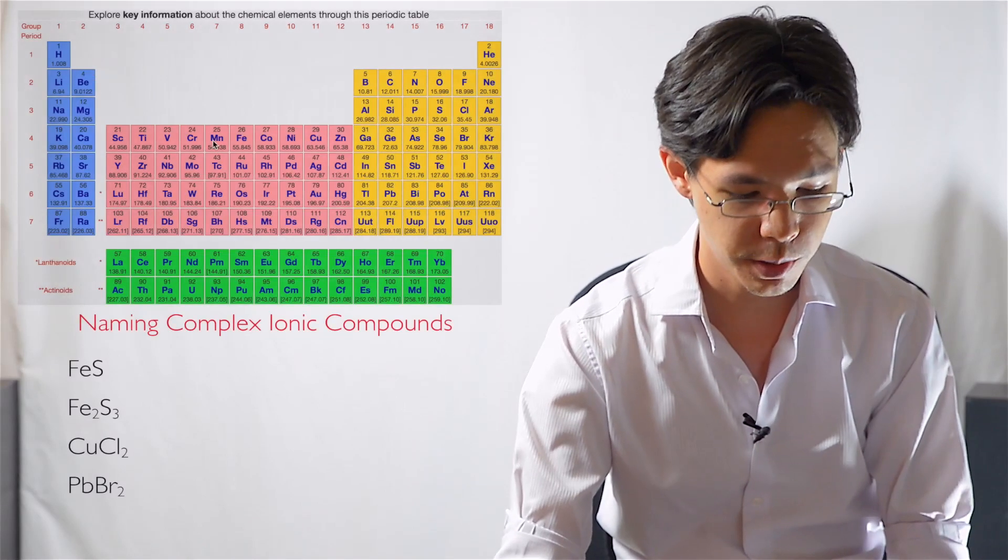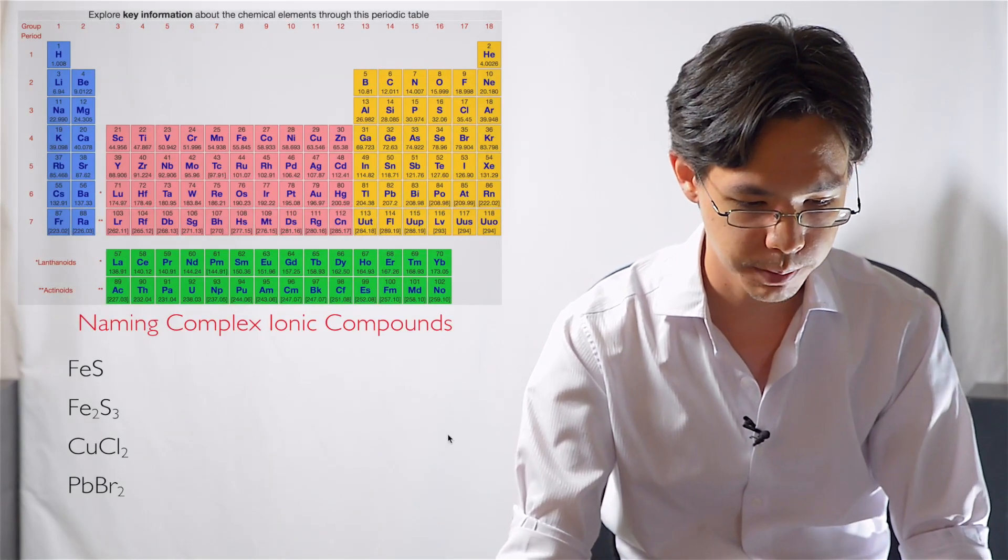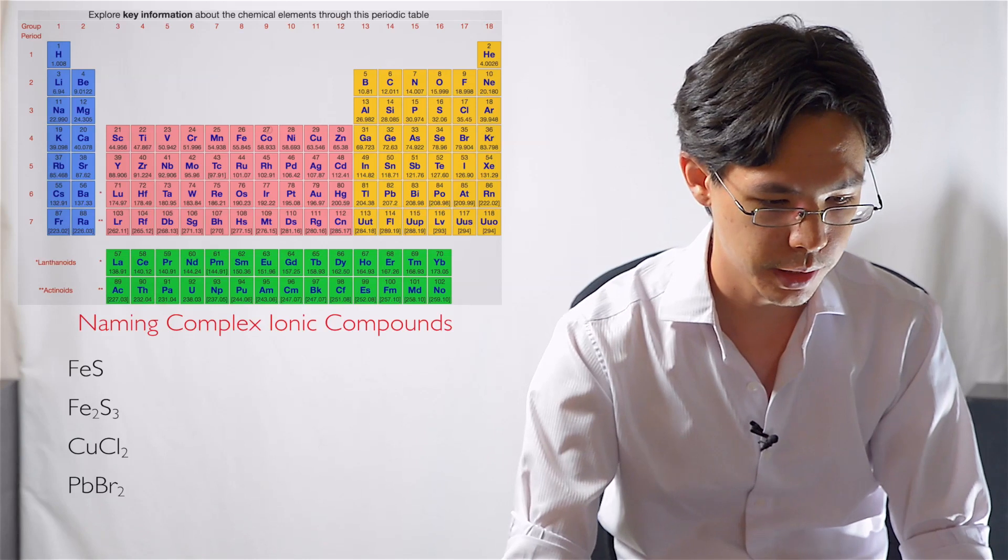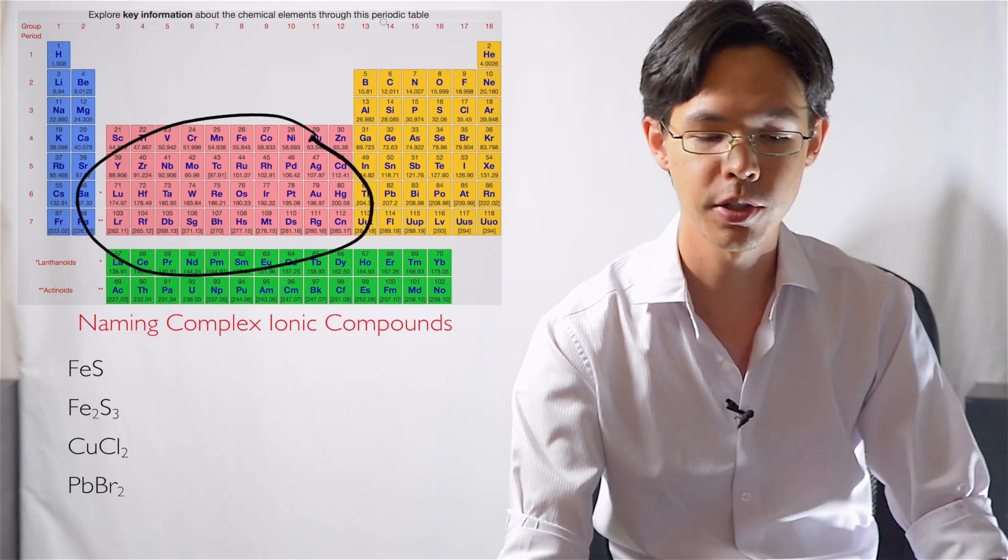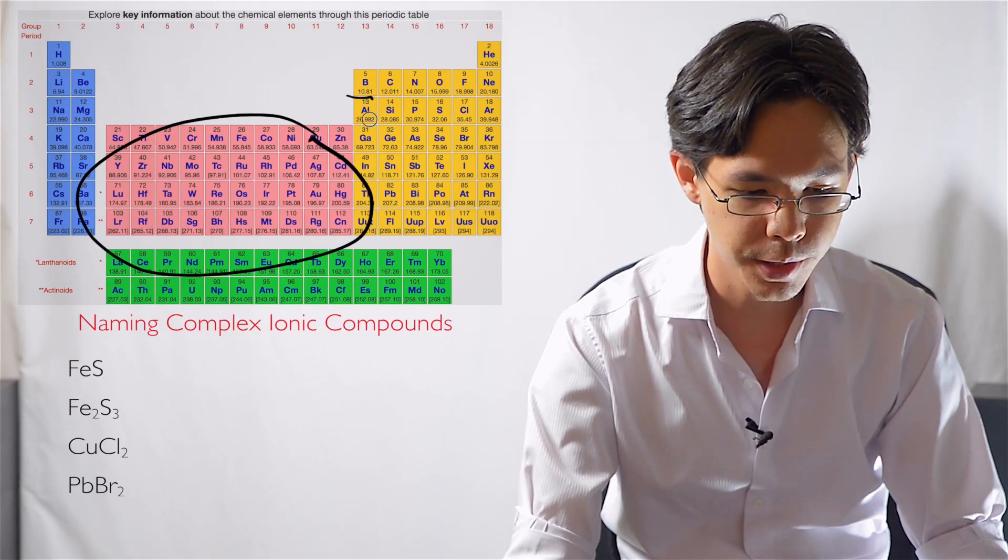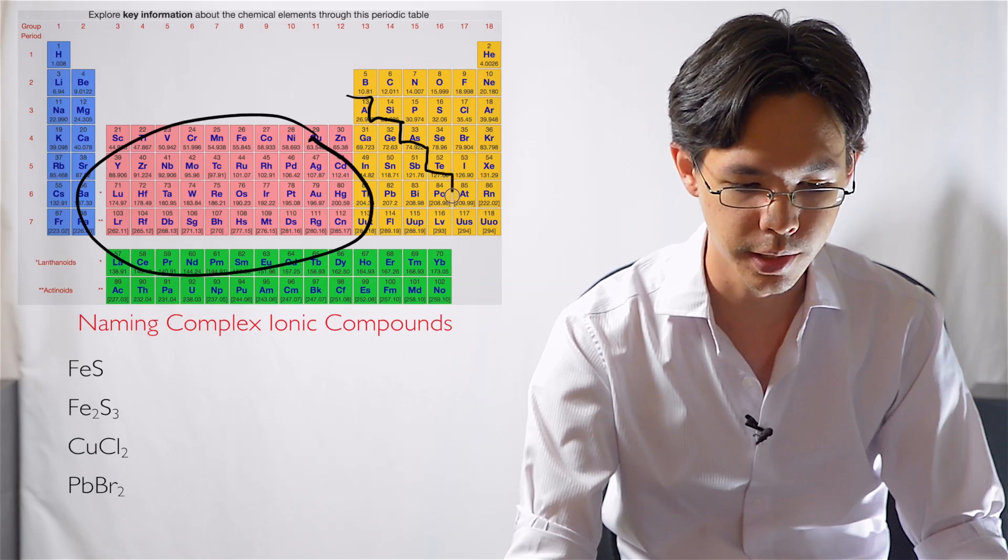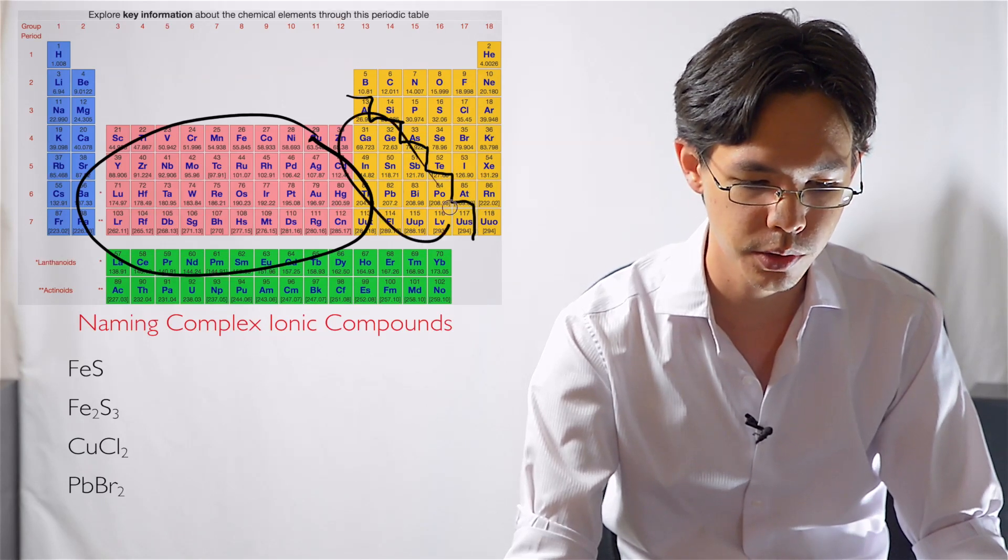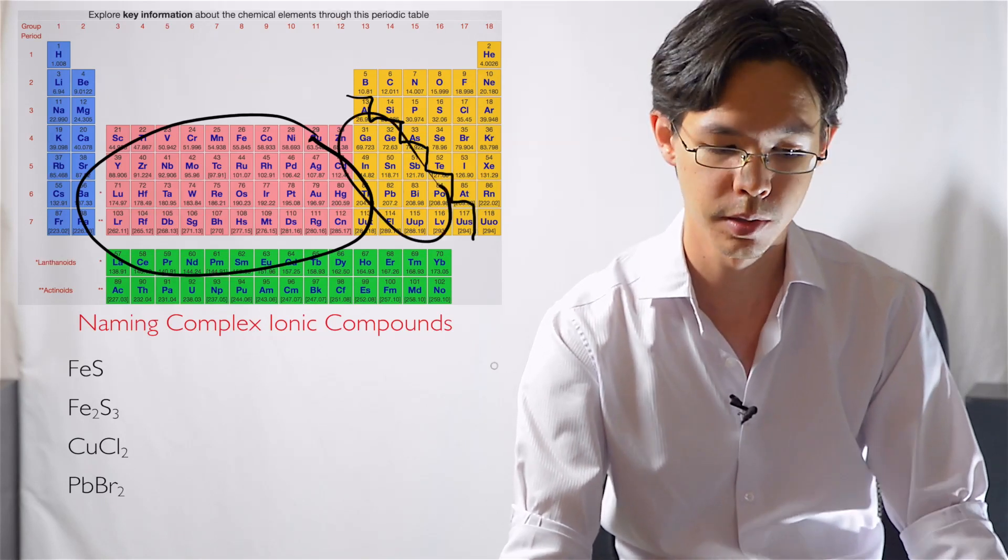So the transition metals here, which are conveniently drawn in pink, these ones here are the transition metals, and the other metals are the metals that live below the staircase underneath the non-metals. So those things there are the other metals.